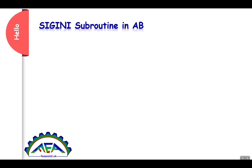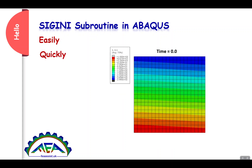Hello, Abacus users. In this video, we are going to talk about the CKINI subroutine in Abacus. CKINI is a subroutine to define the initial stress field to a geometry. You have an initial stress field from previous analysis at time equals to zero, and you are going to map this stress field to your geometry and your elements.